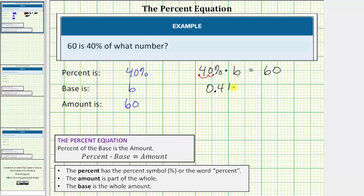So 0.4 times b is equal to 60. To solve for b, we divide both sides by 0.4. On the left side, this simplifies to 1 times b, or b. On the right, we have 60 divided by 0.4. Let's find this quotient by hand on the next slide.